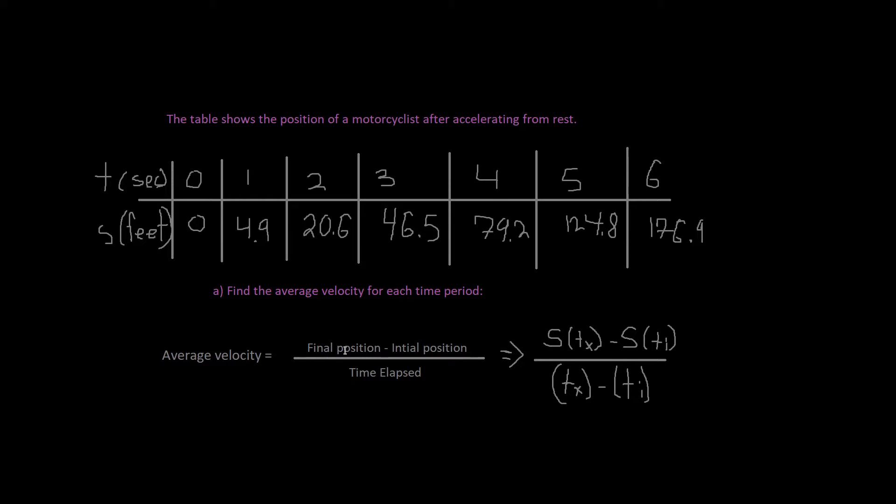Average velocity equals final position minus initial position. So let's say I subtract 20.6 minus 4.9. So this is final position, here's my initial position. And the time elapsed would be 2 minus 1. This is how we write it out.